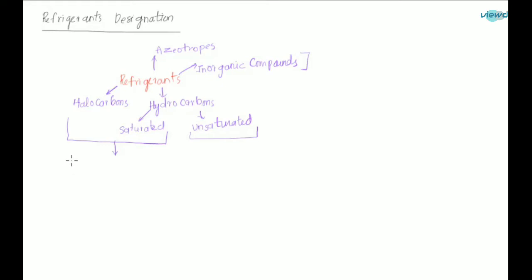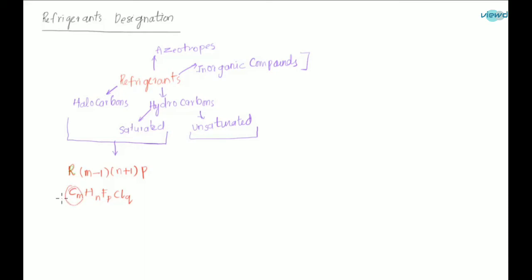There is a formula for this. The designation is called R, M, N, and P. This is how we designate halocarbons and saturated hydrocarbons. Here M, N, and P correspond to: C_M H_N F_P Cl_Q. So C means carbon, H is hydrogen, F is fluorine, and Cl means chlorine.